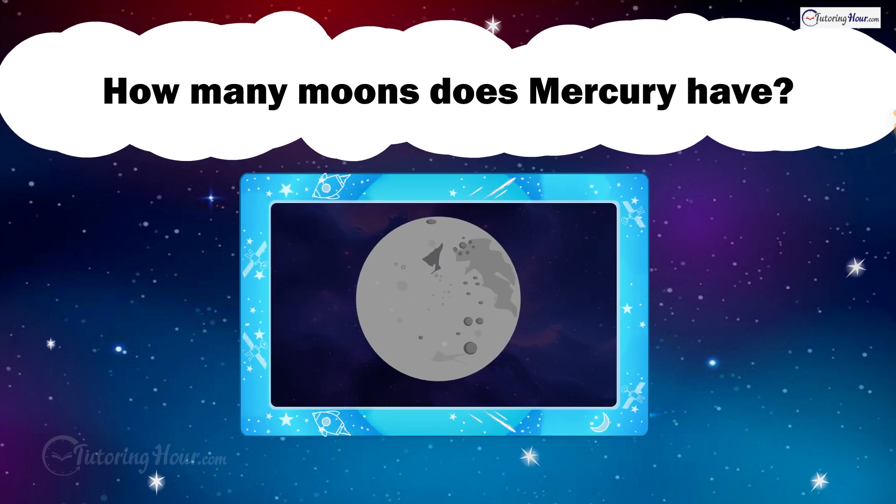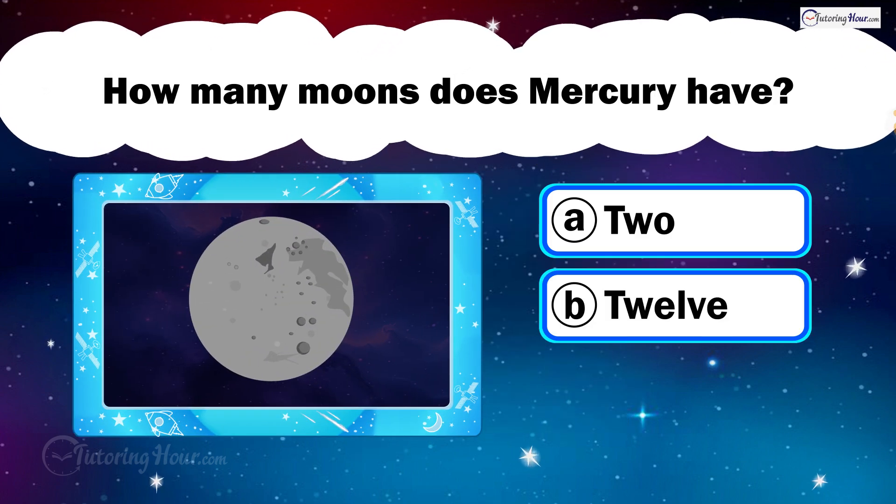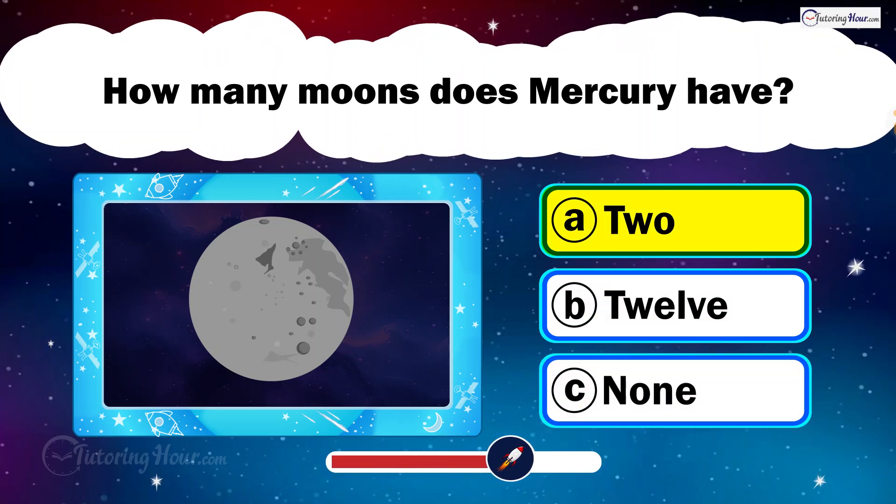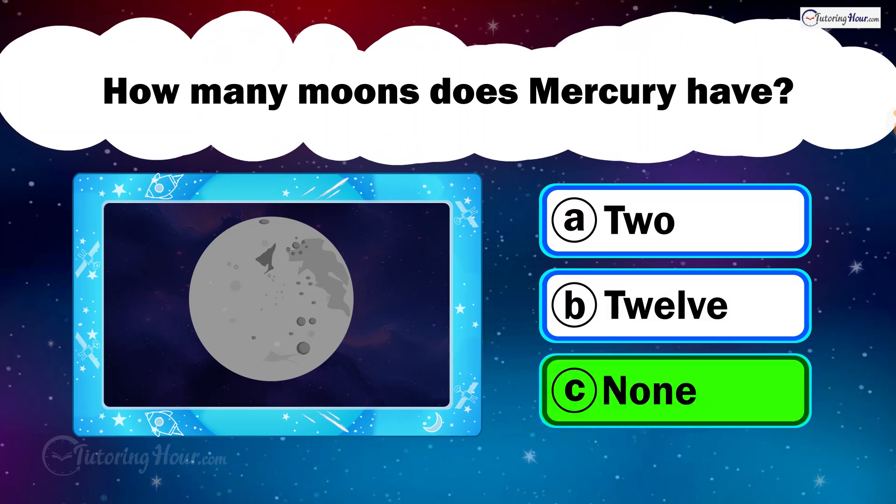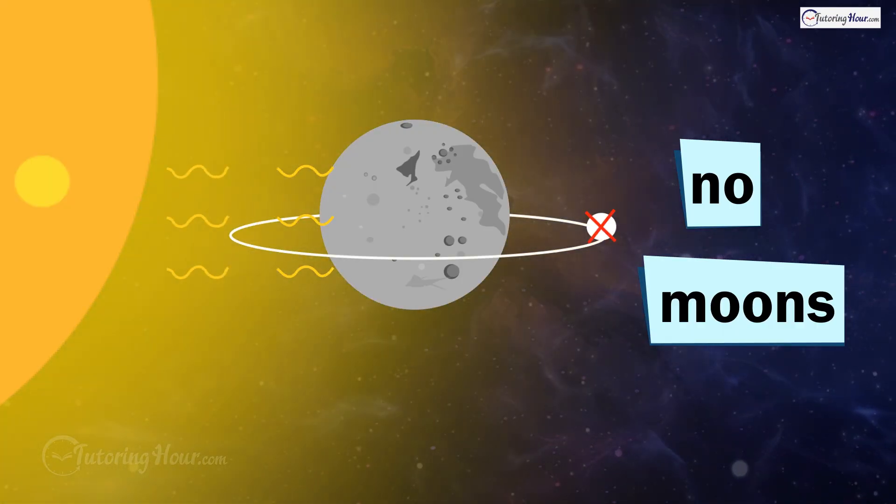How many moons does Mercury have? Is it A. 2, B. 12, or C. None? Mercury has no moons. Because Mercury is so close to the sun and its gravity, it cannot hold on to its moons.